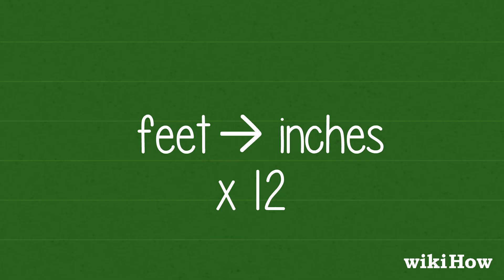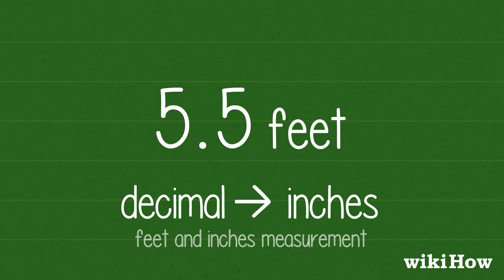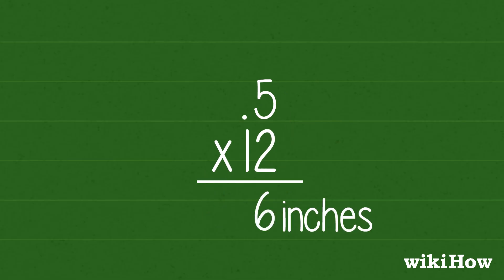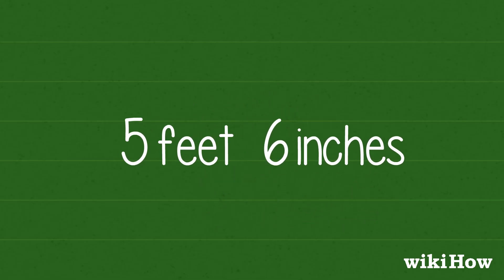This can also be helpful if you get a result like 5.5 feet, and you want to convert just the decimal back to inches for a feet and inches measurement. Multiply the 0.5 by 12 to get 6 inches, then rewrite your measurement as 5 feet, 6 inches.